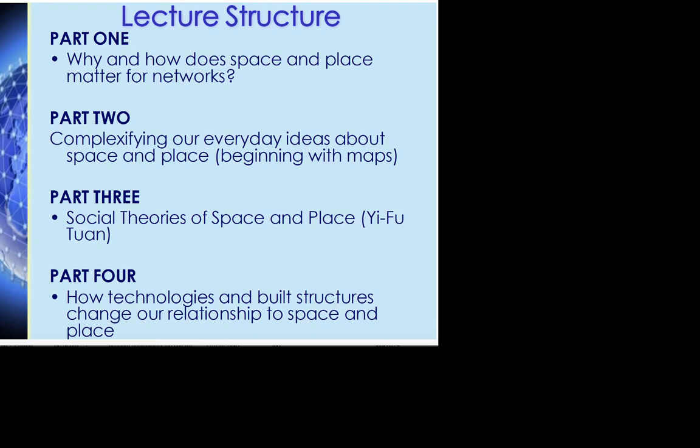In part one we're going to be asking the question about why and how place and space matters for networks. In part two we're going to complexify our everyday ideas about space and place and spend a bit of time thinking about maps as representations of space and place. Part three we'll move to social theories of space and place, beginning with your set reading by Yves Tuan, a very important human geographer, and building from foundational theorists to more recent theorists. In part four we'll try to transfer some of these ideas to theorizing experienced spaces and places on the internet, beginning with a broader question of how technologies and built structures change our relationships to space and place.